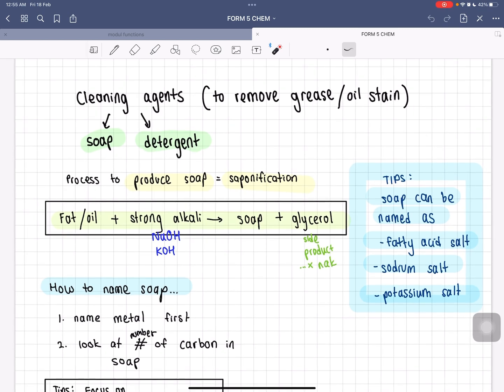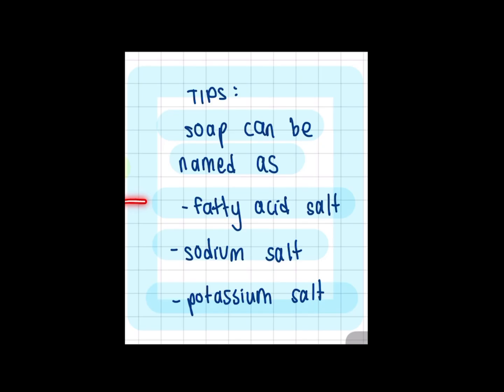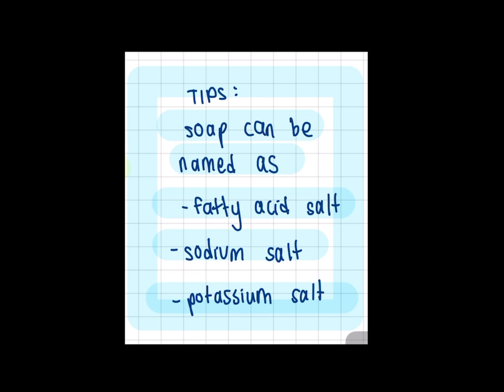A tip: soap can also be named as fatty acid salt — sodium salt or potassium salt — depending on what you use. If you use potassium hydroxide as a strong alkali, then your soap is going to be called potassium salt.